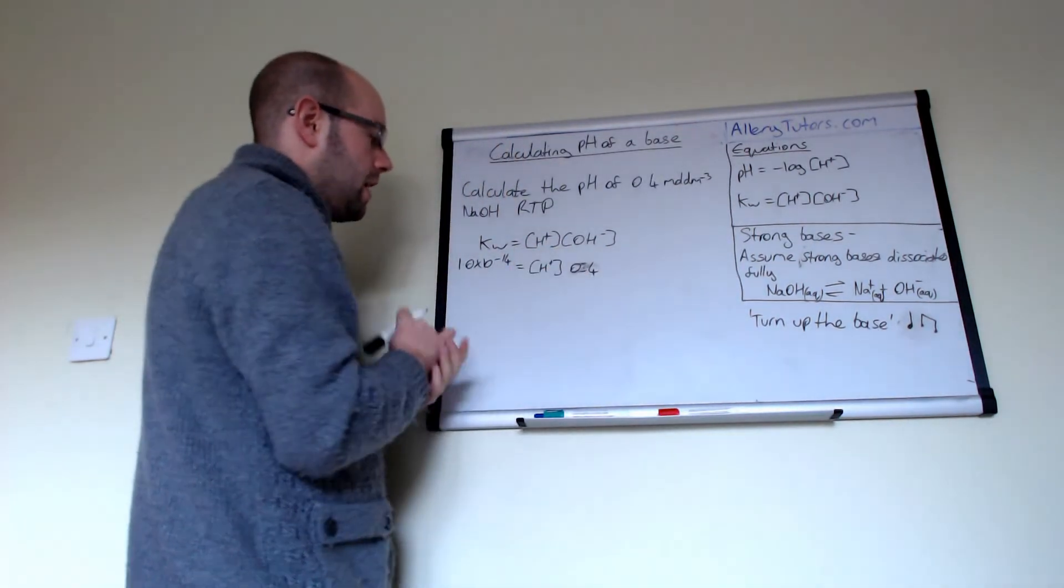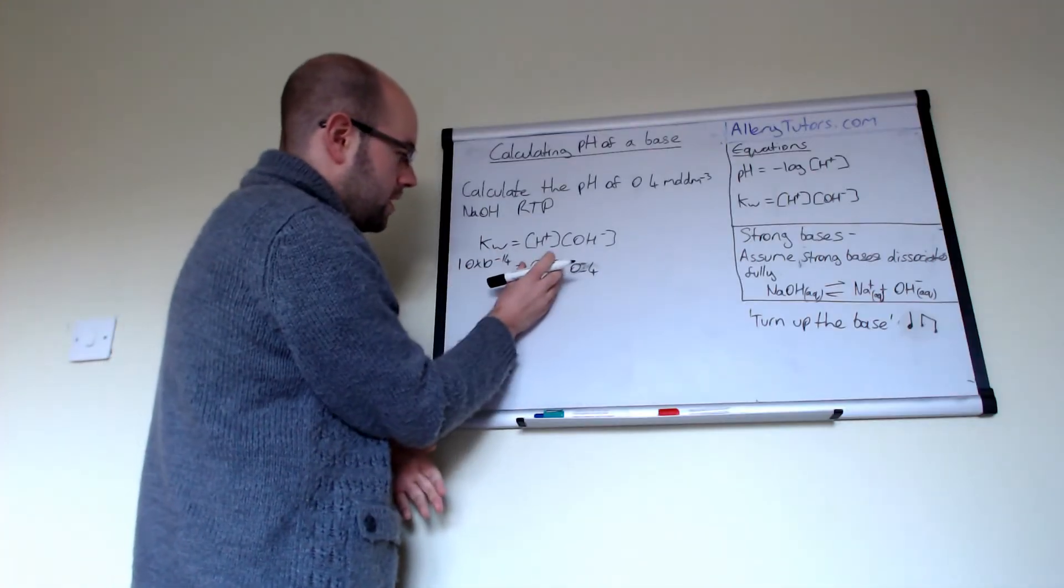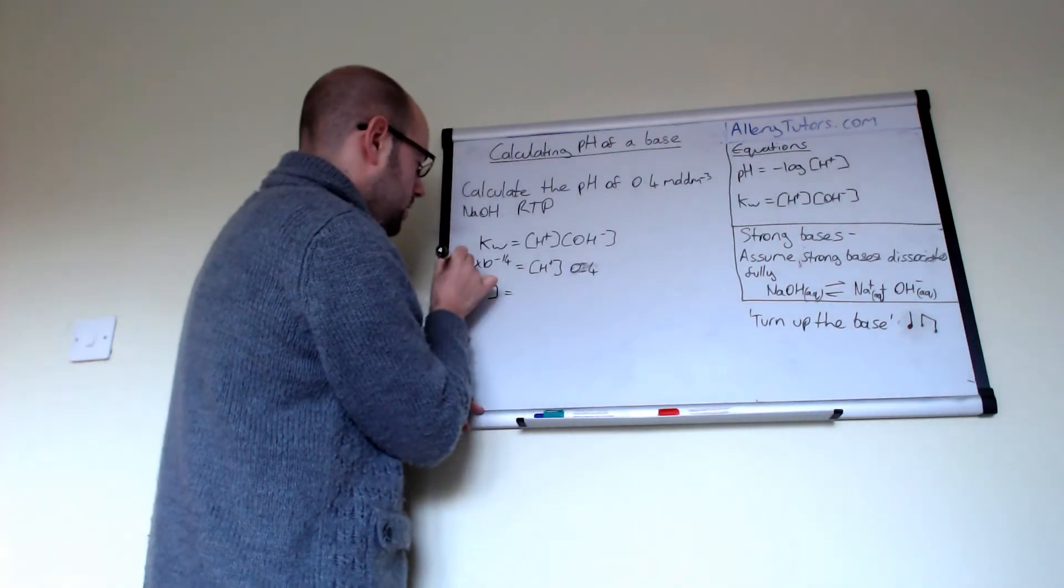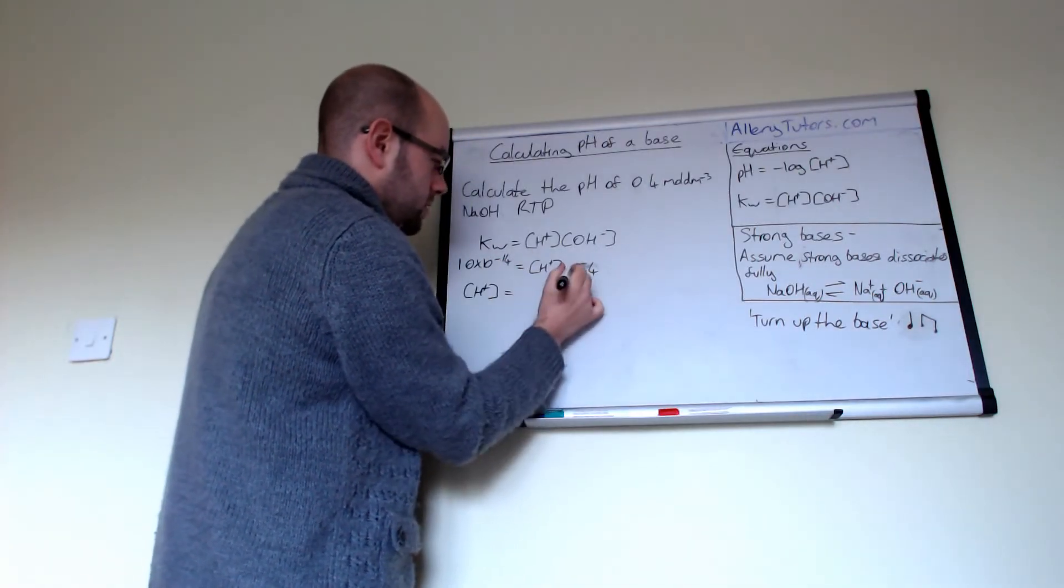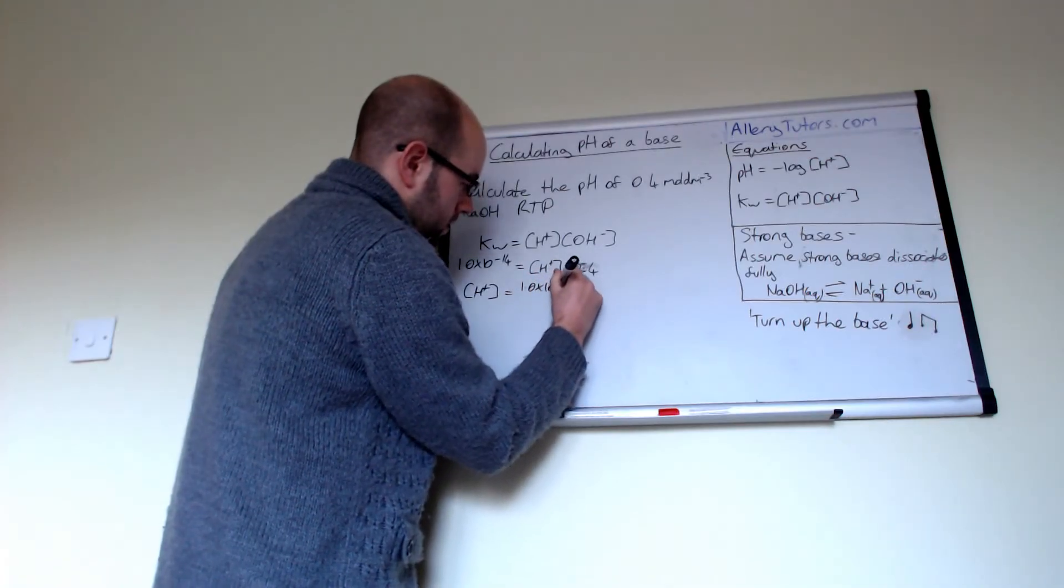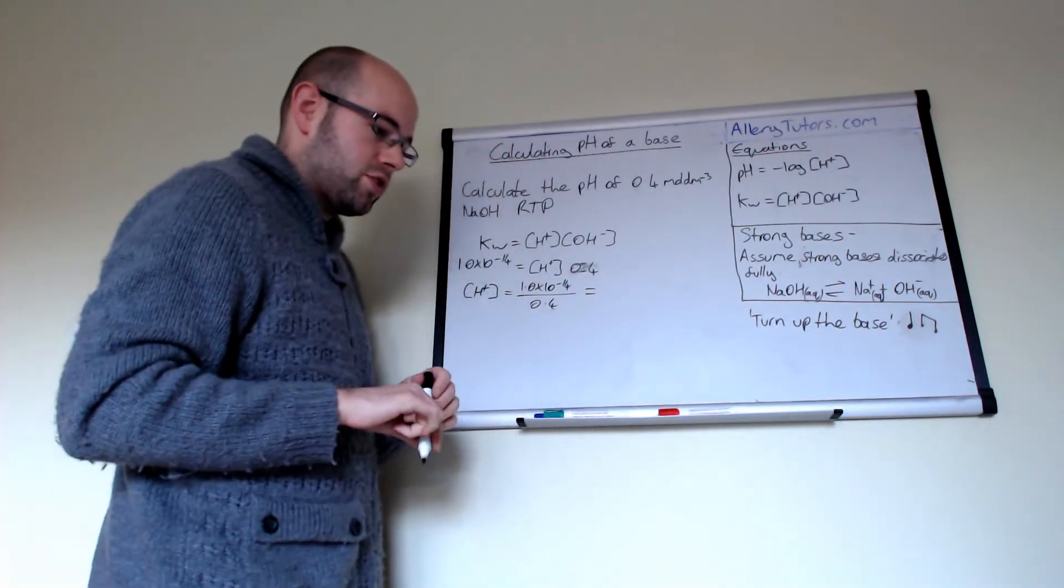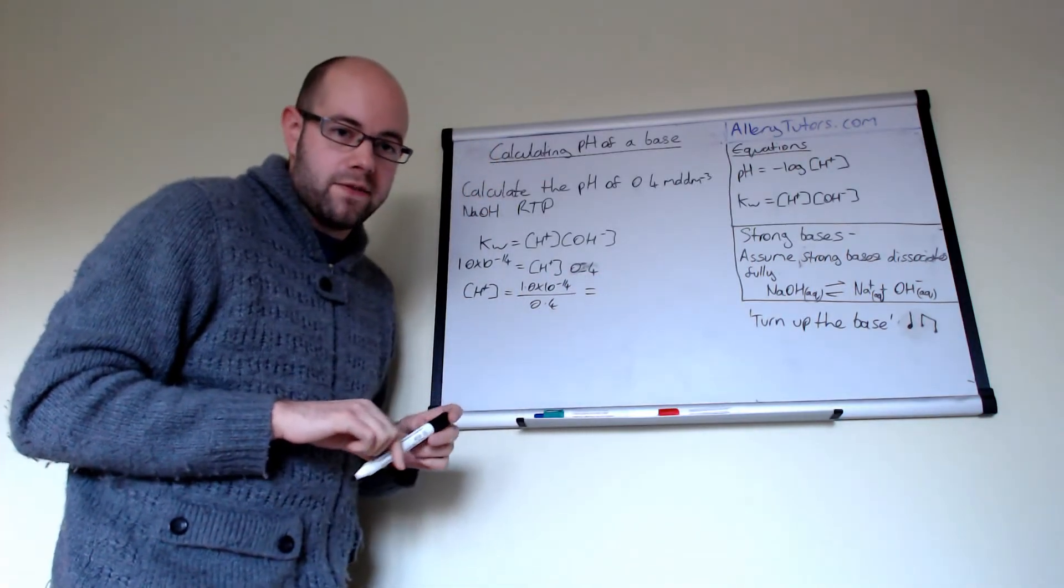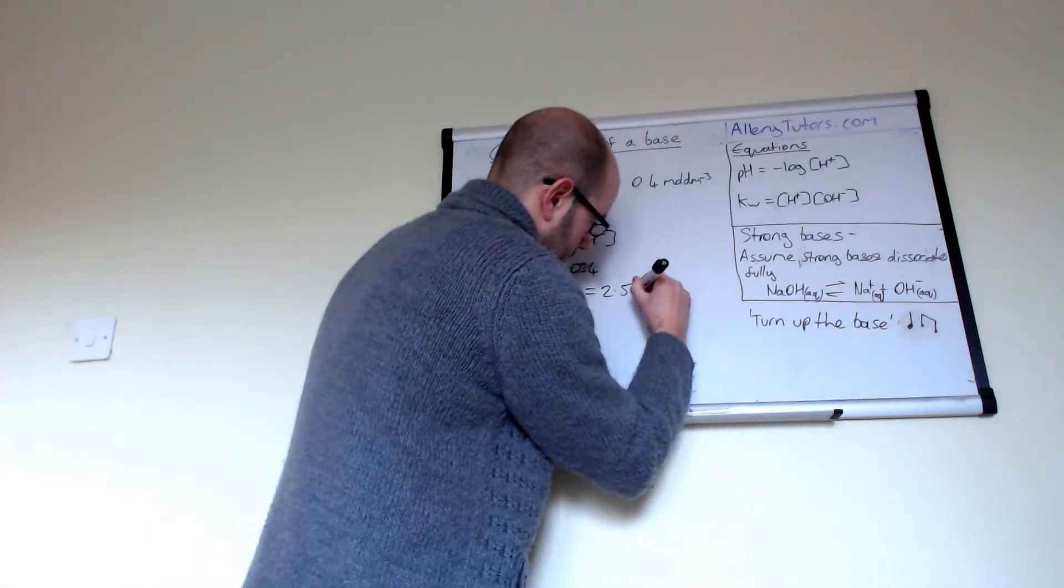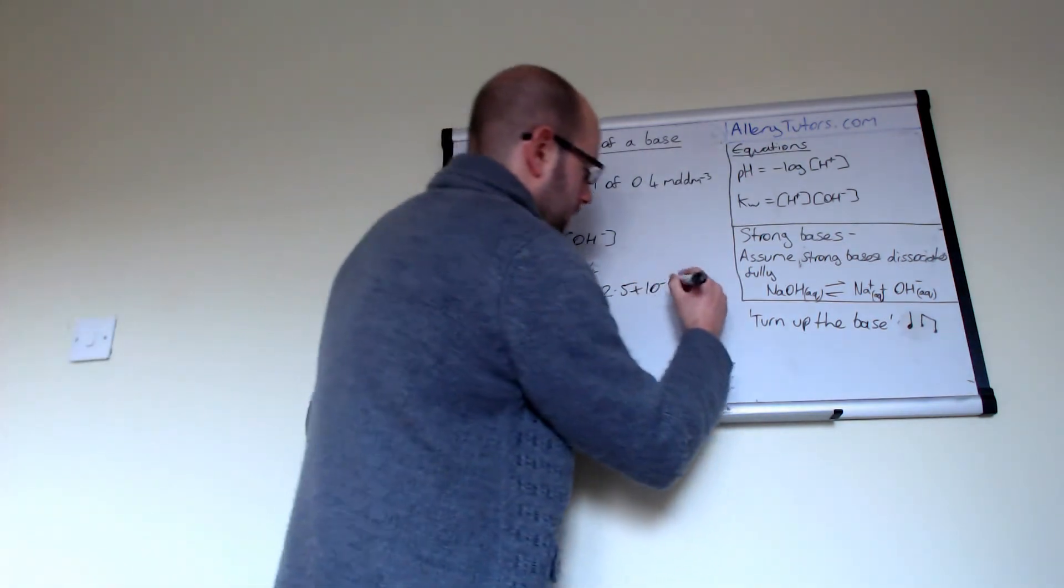You can see here that we have to rearrange our equation to get H plus. To rearrange it, we do concentration of H plus will equal 1 times 10 to the minus 14 divided by 0.4. That should give us a value of 2.5 times by 10 to the minus 14. There you go. That's our concentration of H plus.